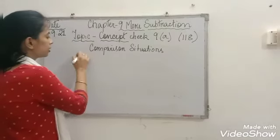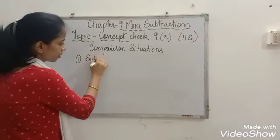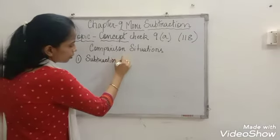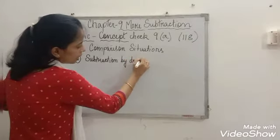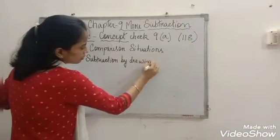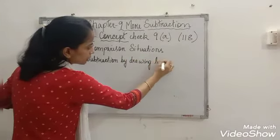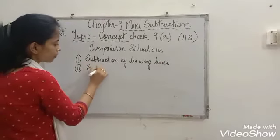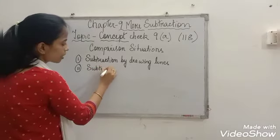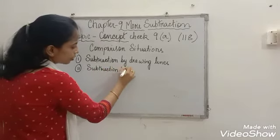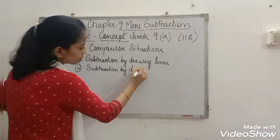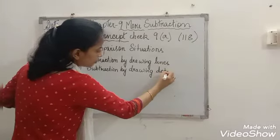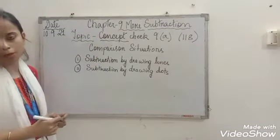We already solved sums based on comparison situations. And what are the two concepts we learn under more subtraction to solve comparison situation problems? That is, subtraction by drawing lines, and subtraction by drawing dots.